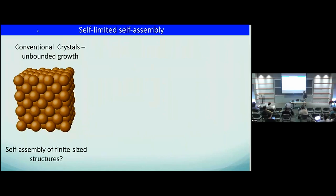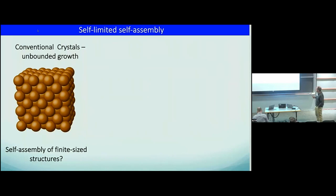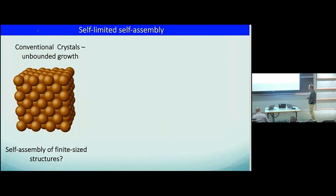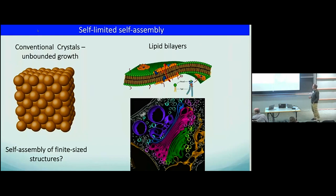Thank you very much, Michael, for the presentation, and again, a great question. Probably something that people in the audience know very well: if you have nanoparticles, you can grow a crystal and this crystal will grow until you run out of particles. What I want to talk about is self-assembly of structures that grow to a critical size and then stop growing — so self-limited self-assembly.